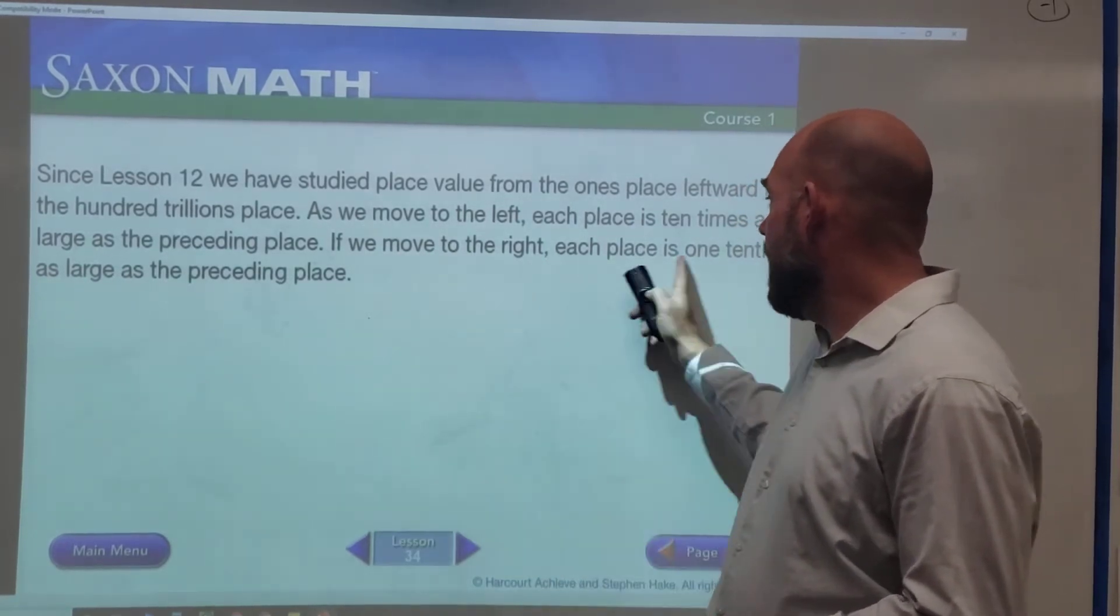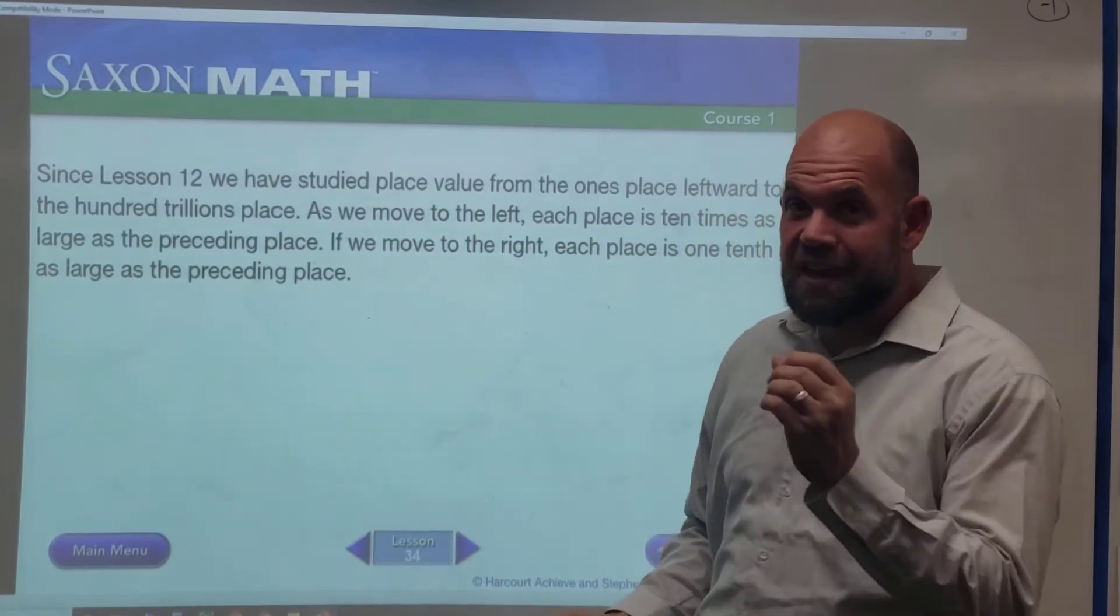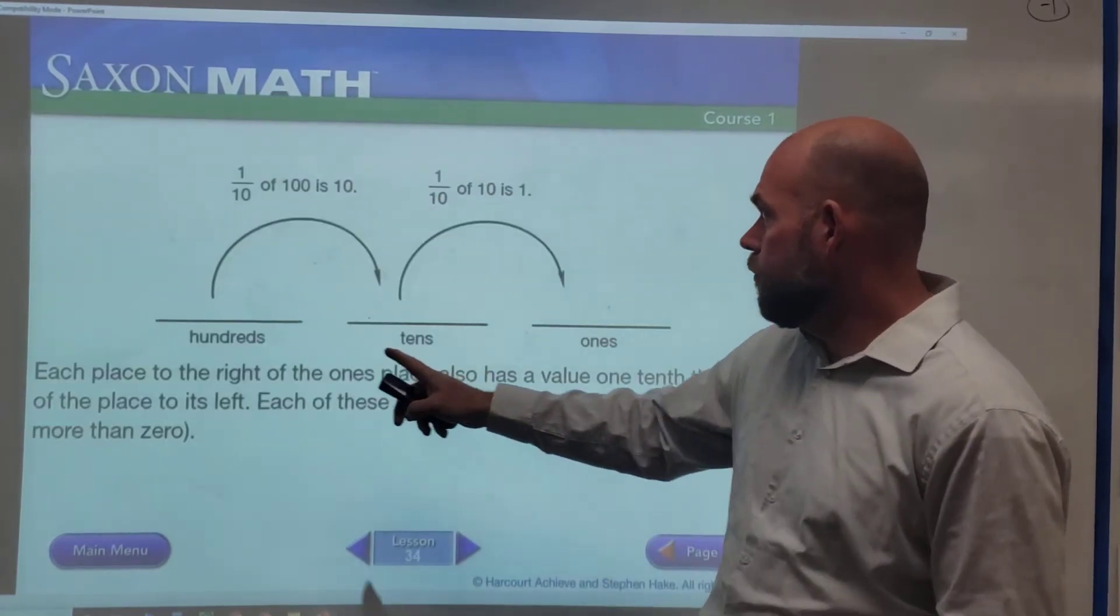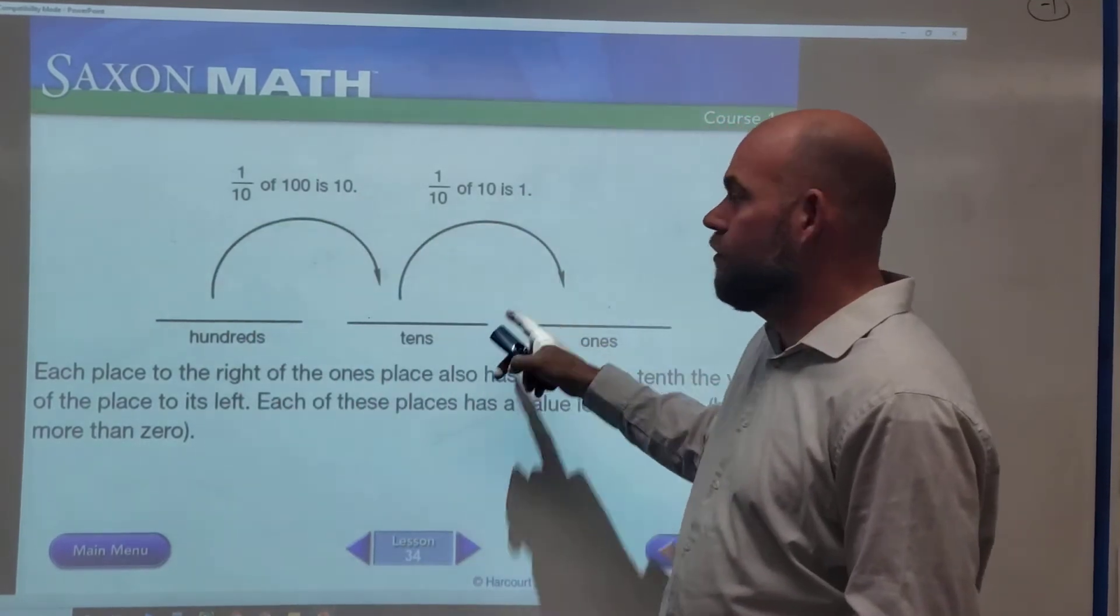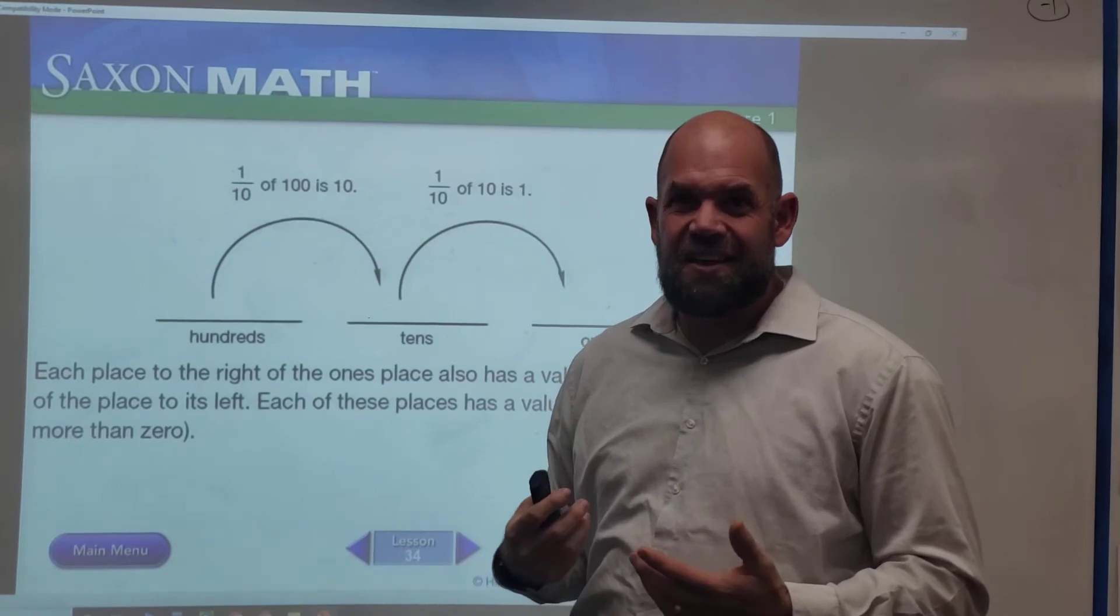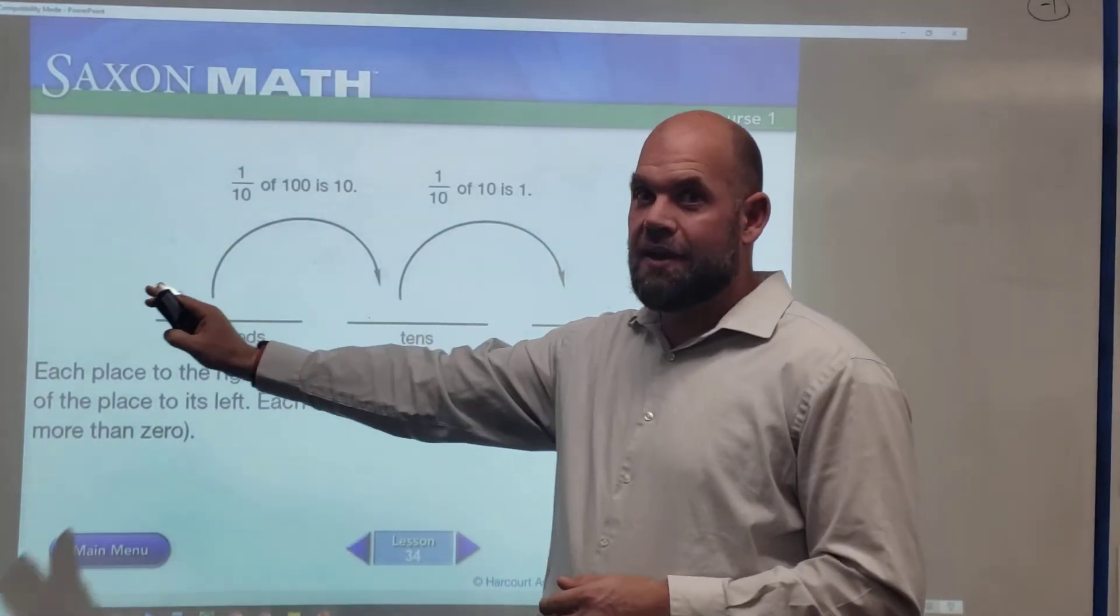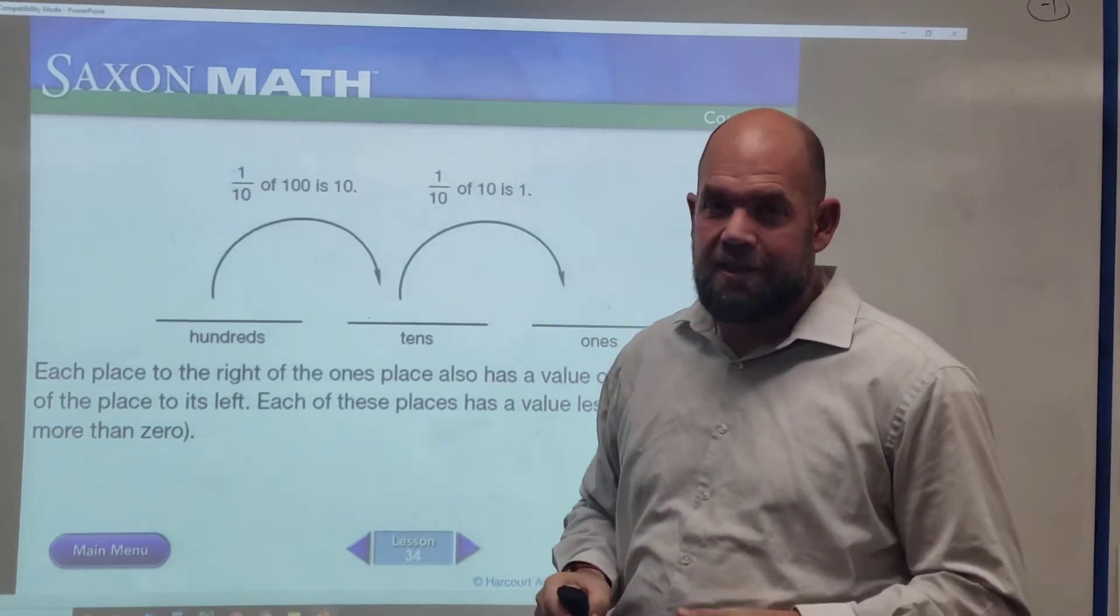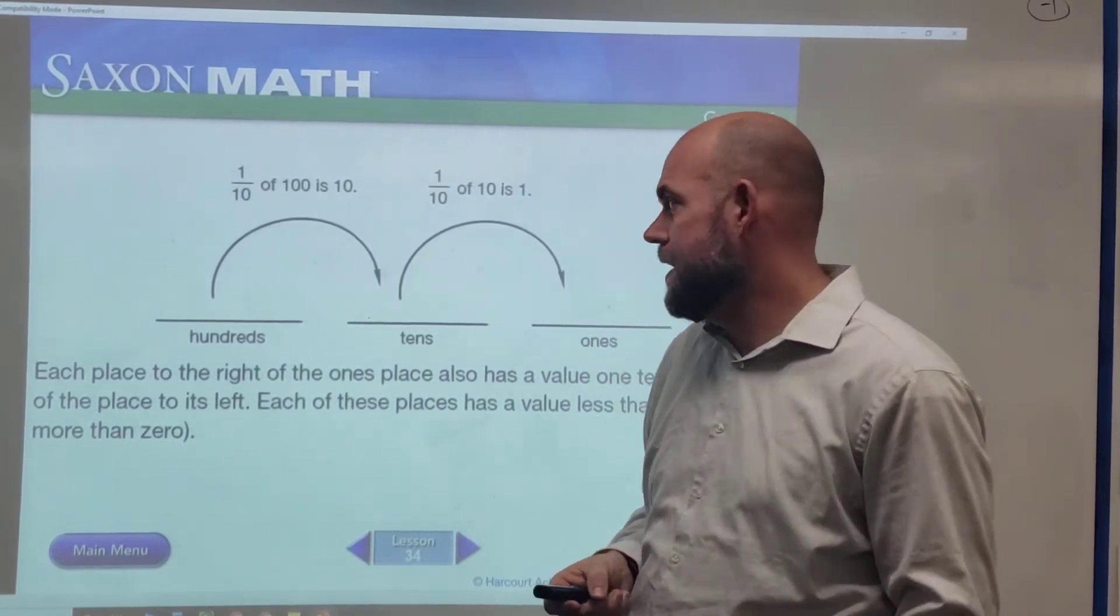If we move to the right, it's going one-tenth as large as the next number from the decimal point. One-tenth of a hundred is ten. One-tenth of ten is one. I just think of this as either adding a zero if we're going to the left or taking away a zero if we're going to the right, by multiplying by one-tenth or dividing by ten.